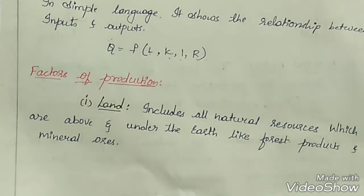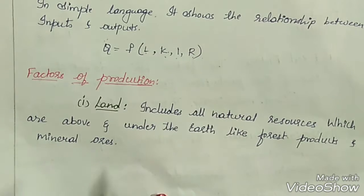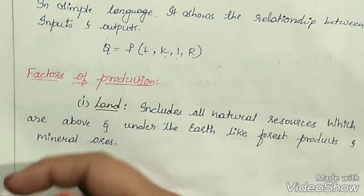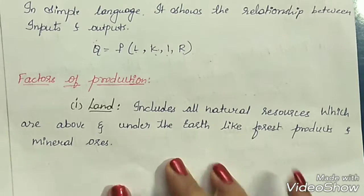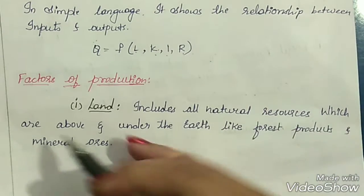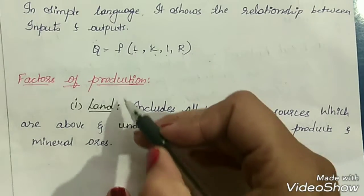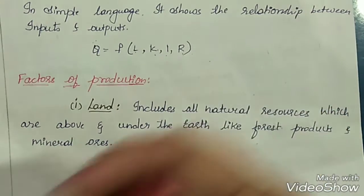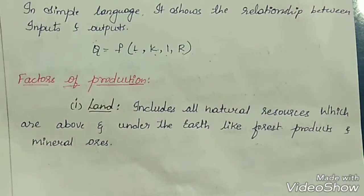Next, factors of production. Whenever we want to carry on any production activities, there are certain factors which are necessarily required. Basically there are four factors. First is land — land is obviously very necessary for carrying production. Land includes all natural resources which are above and under the earth, like forest products, mineral oils, water, sunlight, and plants.